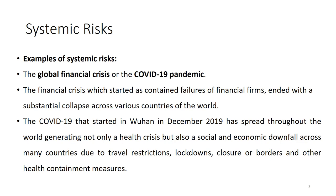This has been the case mainly because of health containment measures: travel restrictions, lockdown, border closures, and mobility restrictions, among others. It has shown to us that because our world is very much connected, a risk can spread to all countries and it's very difficult to contain. COVID-19 has been a true example of what systemic risk looks like.